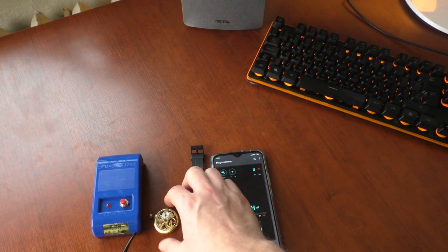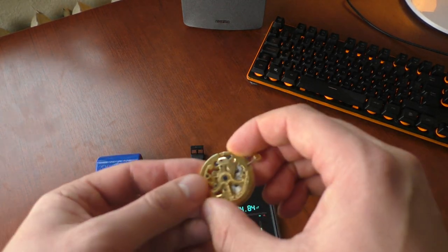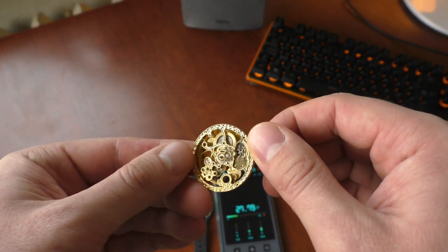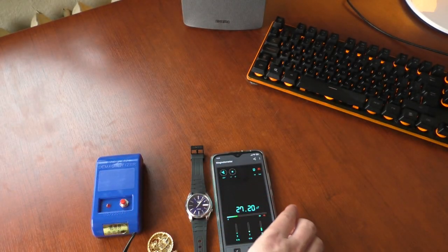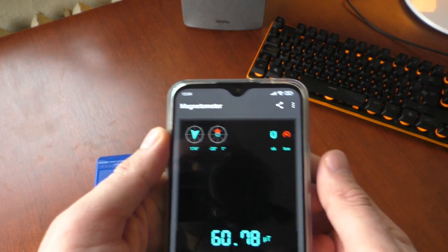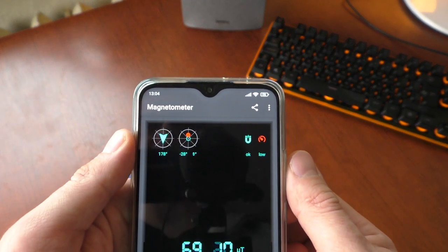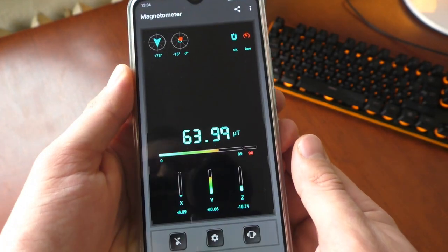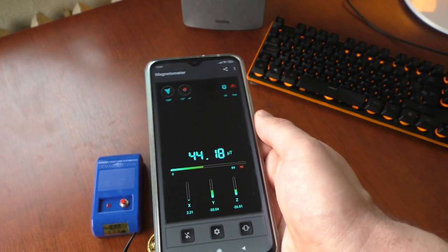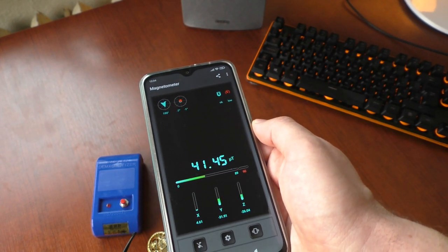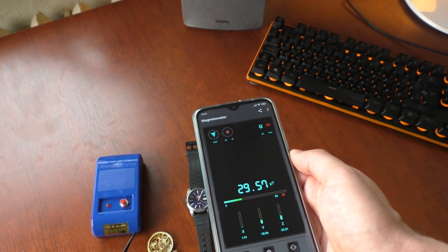I will first magnetize this movement and demagnetize it and see the readings on the phone. Speaking about the readings, I downloaded this magnetometer app which uses the internal sensor of the phone, which is the same as for compass I believe.